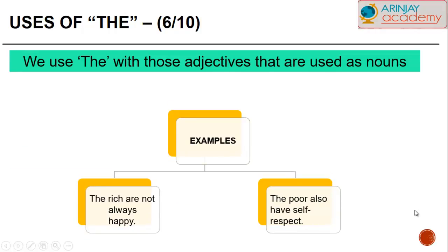We use the article THE with those adjectives that are used as nouns. For example, the rich are not always happy. The poor also have self-respect. Here the words rich and poor are adjectives but they represent persons. Therefore, we use THE before these words.